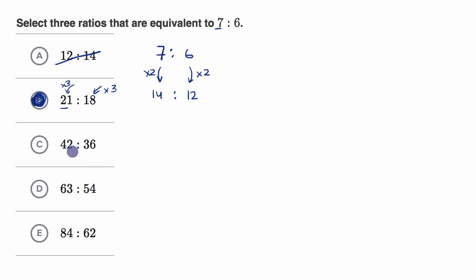What about 42 to 36? Well to go from seven to 42, we're going to have to multiply by six. And to go from six to 36, we also multiply by six. So this, once again, is an equivalent ratio. We multiply each of these by six and we keep the same order. So that is equivalent right over there.